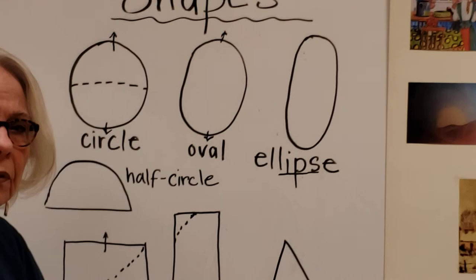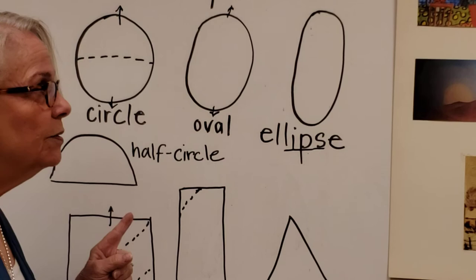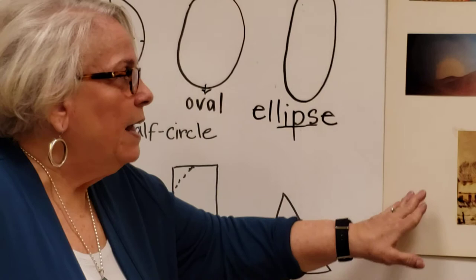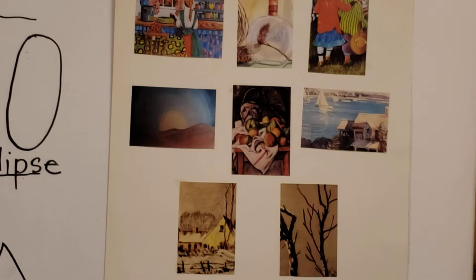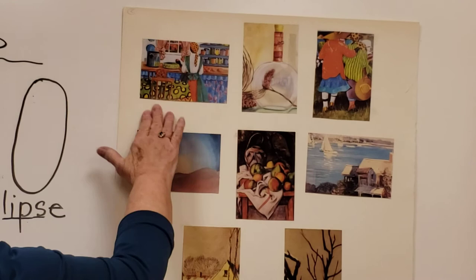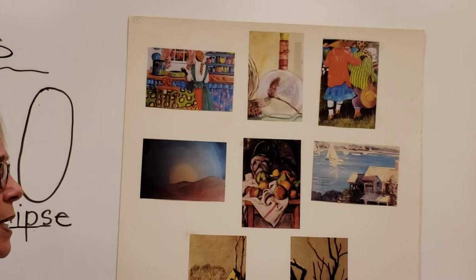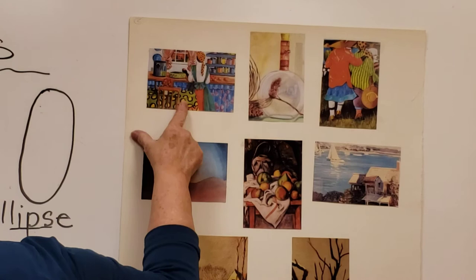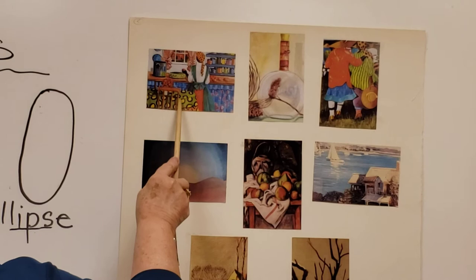Some really great artists have used shapes in making their pictures. Let's look over here at some artworks. I love this artist — this is Jonathan Green. Jonathan Green is a South Carolina artist and he uses lots of beautiful colors and lots of shapes in his paintings. In this picture, on the tablecloth he used lots of round circle shapes for the decorations.